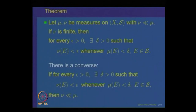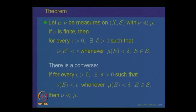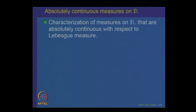We require nu to be finite. That means absolute continuity and nu finite together imply this condition: for every epsilon there is a delta such that mu of E less than delta implies nu of E less than epsilon. For the converse, we do not need this property. So this is one characterization of absolutely continuous measures.